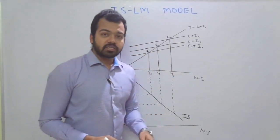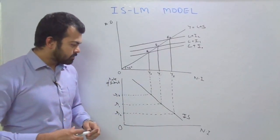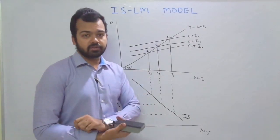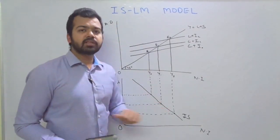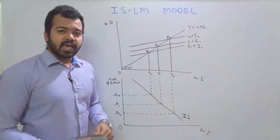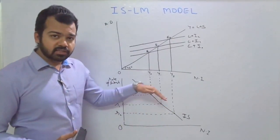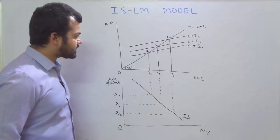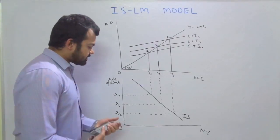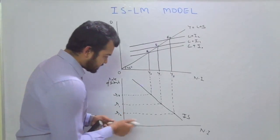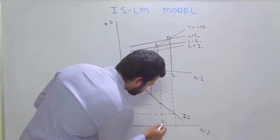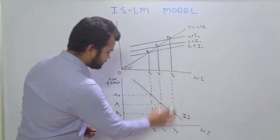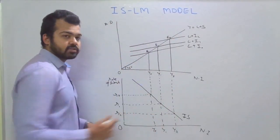The question arises: why is the IS curve downward sloping? Because there is an inverse relationship between the rate of interest and the level of investment. When we draw or extend these lines to the x-axis, we refer to the same Y0, Y1, and Y2. So the IS curve is downward sloping.